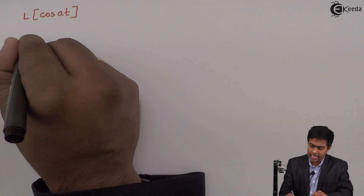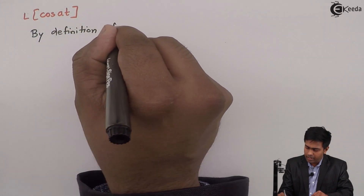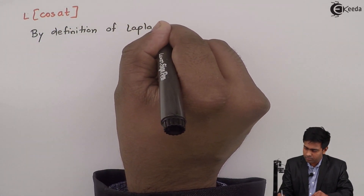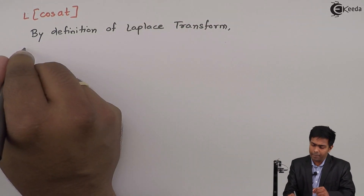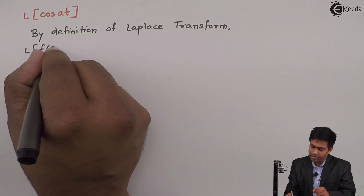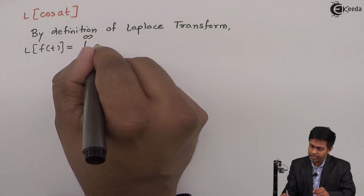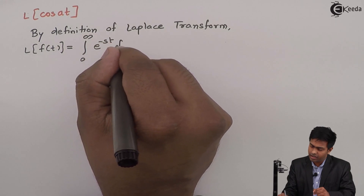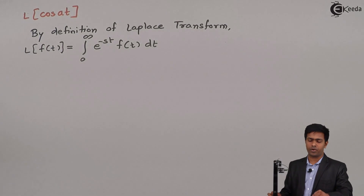As I said, we are going to use the definition of Laplace transform. By definition of Laplace transform, we have: Laplace of f(t) is equal to the integration from 0 to infinity of e raised to minus st times f(t) dt. This is the definition of Laplace transform.